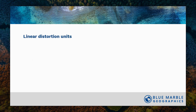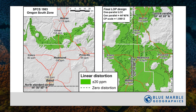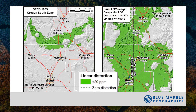The units of linear distortion are often expressed in parts per million. One part per million is one millimeter per kilometer of distortion; 189 parts per million is about one foot per mile. On the left we have the traditional state plane coordinate system of 83 Oregon South — that bigger brown area — where the green region represents where linear distortion is less than plus or minus 20 parts per million. On the right, the low distortion redesign projection for 2022 achieves a much larger area within plus or minus 20 parts per million. You'll also notice the central parallel is up towards the north of the region rather than the center, which is to deal with the tilt of the slope.